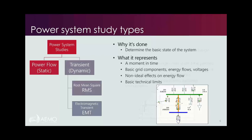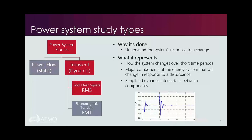Moving beyond static simulations, we can also perform transient or dynamic simulations to understand how the system responds to a disturbance or change, looking at the immediate aftermath over very short periods — maybe a couple of seconds up to a few minutes. We need to model major components of the energy system that change in response to a disturbance, primarily generator models and their control systems. The most common method is RMS — root mean square — which is essentially a mathematical simplification of the power system physics, meaning it runs very quickly on a computer, though with some assumptions and simplifications.